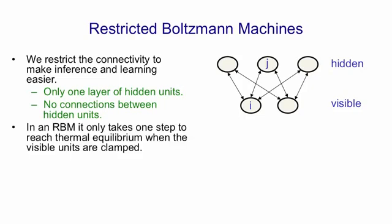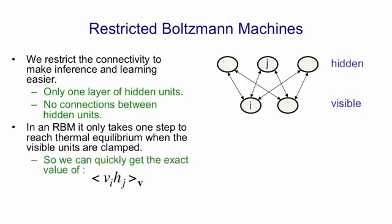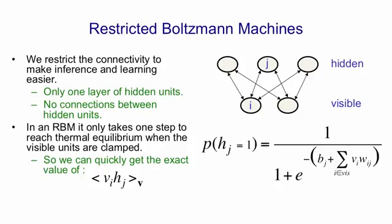The good thing about an RBM is that if you clamp a data vector on the visible units, you can reach thermal equilibrium in one step. That means with a data vector clamped, we can quickly compute the expected value of VIHJ, because we can compute the exact probability with which J will turn on, and that is independent of all the other units in the hidden layer. The probability that J will turn on is just the logistic function of the input that it gets from the visible units, and quite independent of what other hidden units are doing. So we can compute their probabilities all in parallel, and that's a tremendous win.